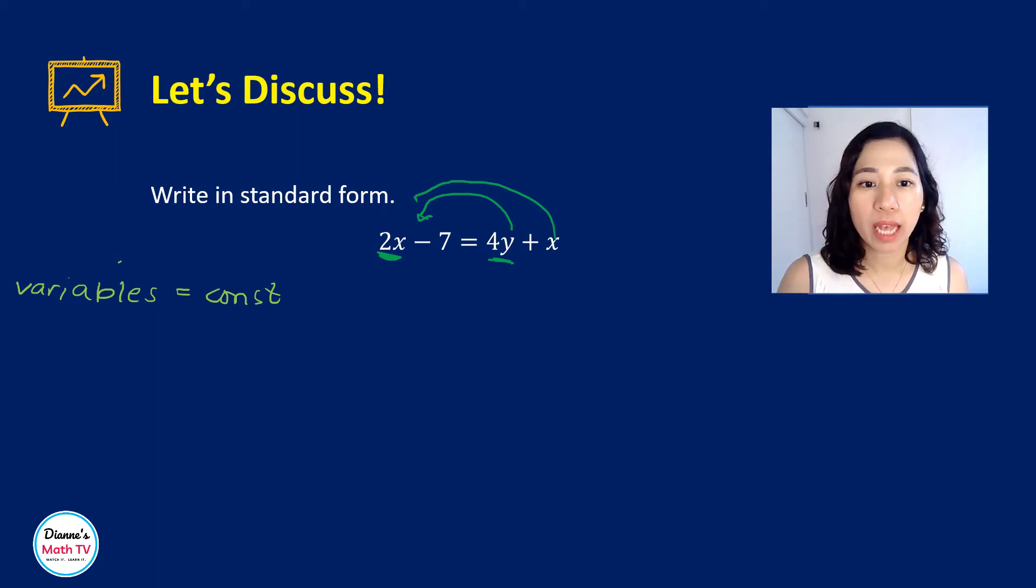And what else? The constant here, I will put it on the other side. So remember that whenever we're transposing, we have to change the sign. Therefore, we have 2x. The 4y here becomes minus 4y, and then the x here becomes minus x equals negative 7 here. The minus 7 there will become positive 7.